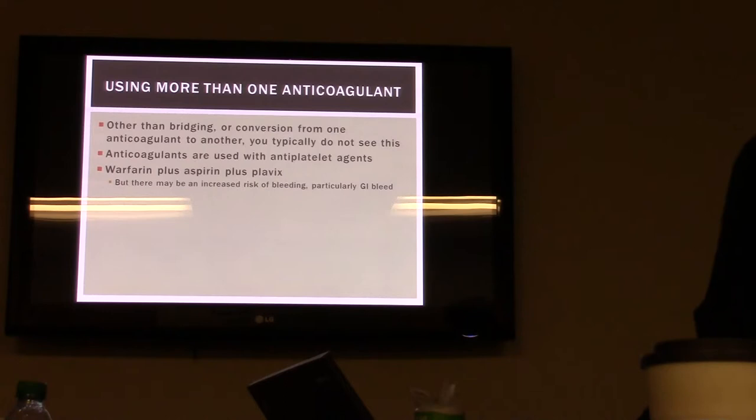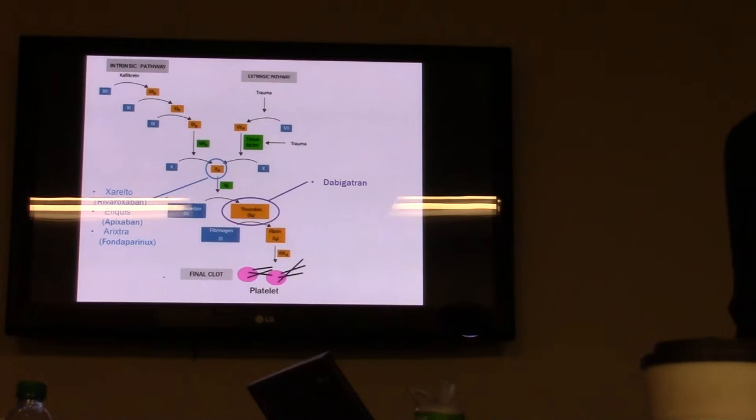The newer oral agents work mostly at factor Xa — Xarelto, Eliquis, and Arixtra — and then Dabigatran works on thrombin. It's coming out with so many new ones it's hard to keep up nowadays.